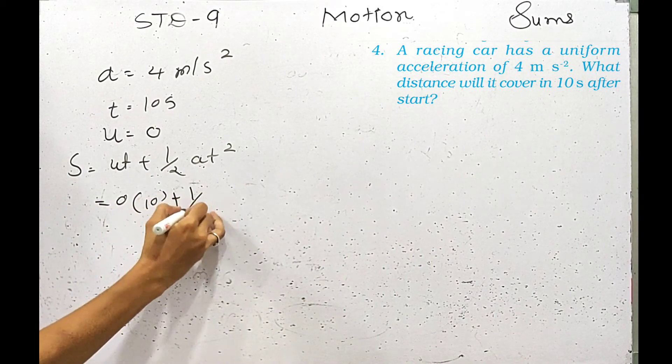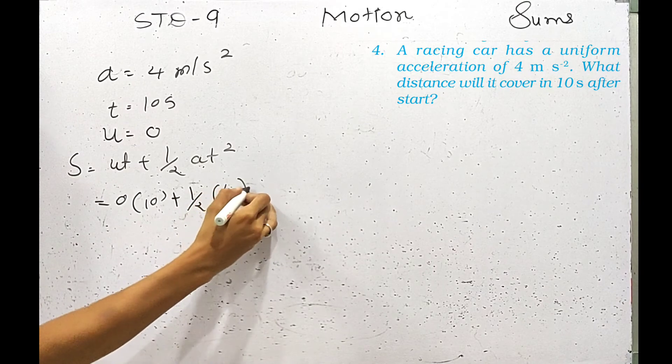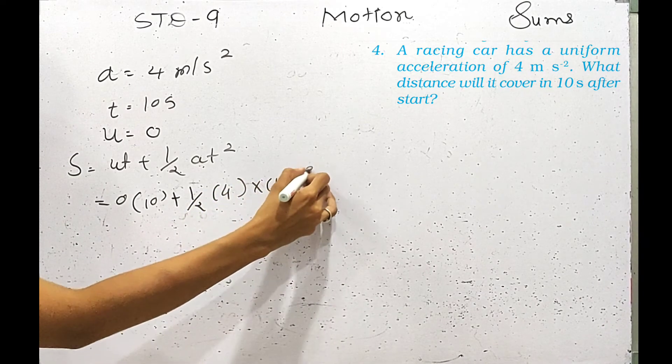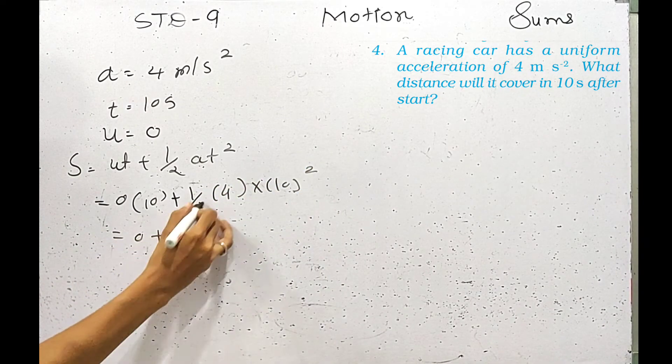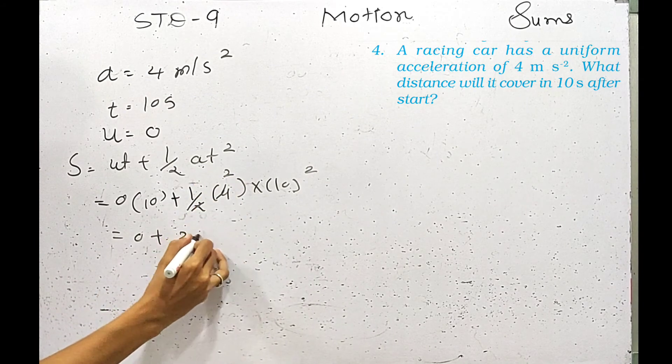This will be half. This will be 4. This will be 10 squared. This is 0. This is 2. 2 multiplied by 100.